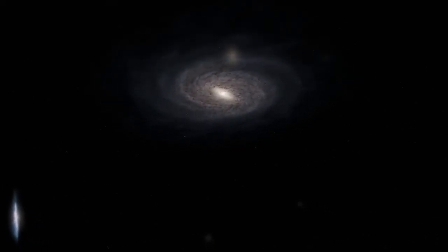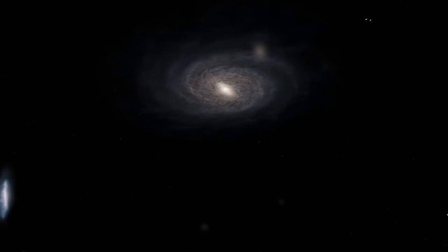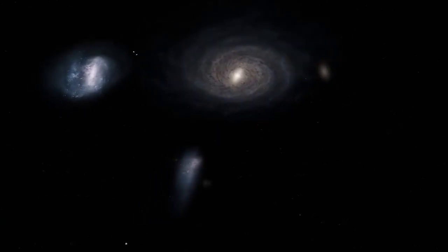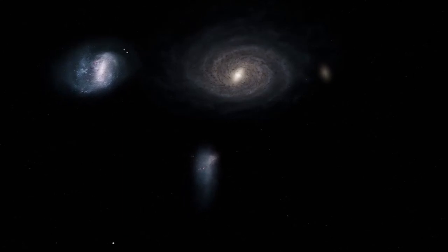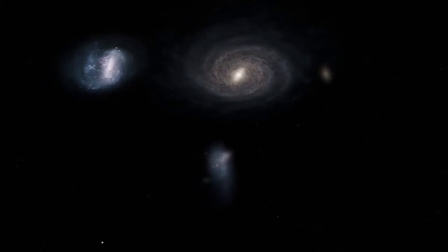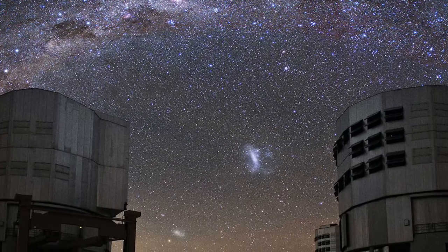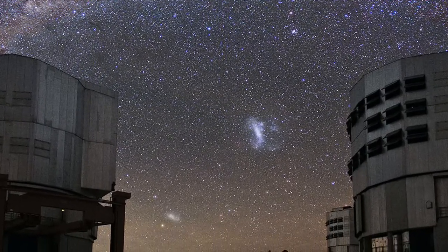But our galaxy does not destroy all of the dwarf galaxies that come its way. Some end up orbiting us. Here, for instance, are the large and small Magellanic clouds, some of the nearest galaxies to our own. From the southern hemisphere, you can see these dwarf galaxies as small, cloud-like patches in the sky.